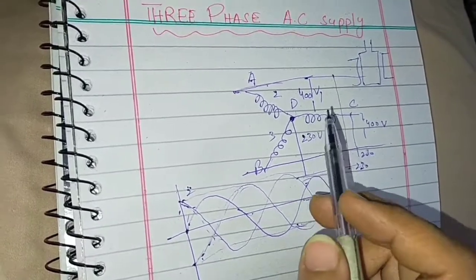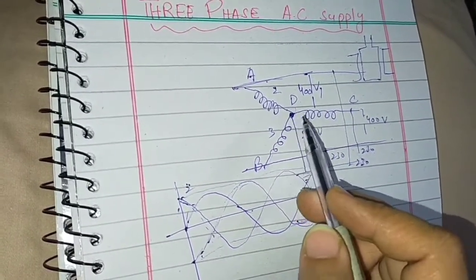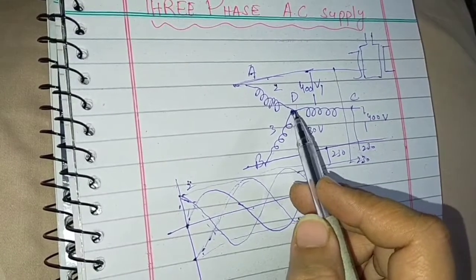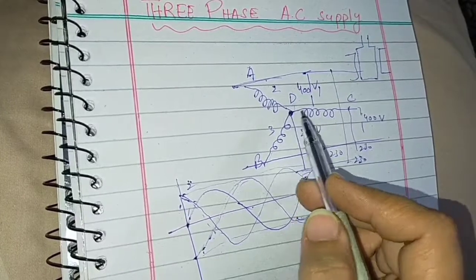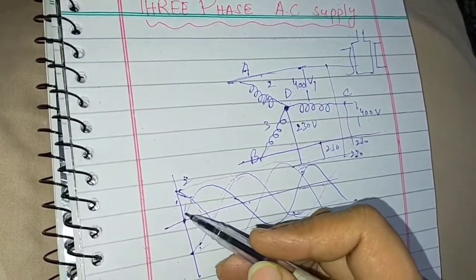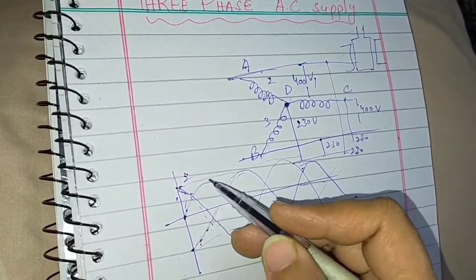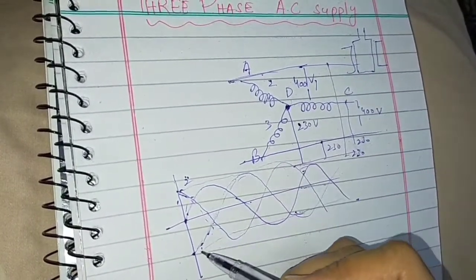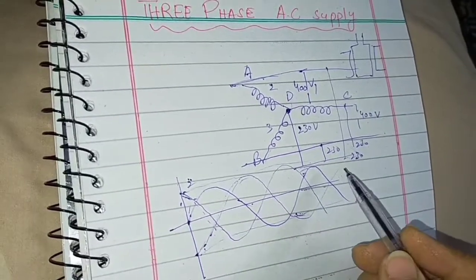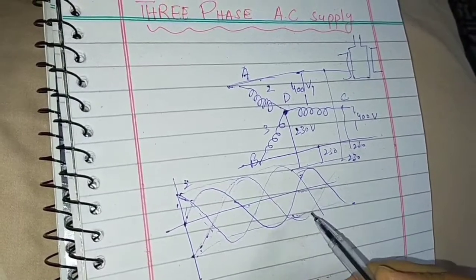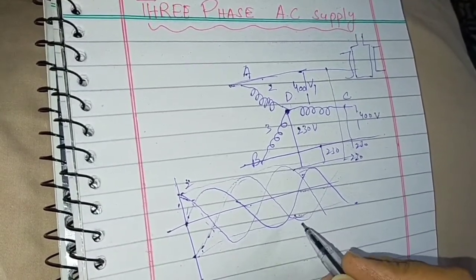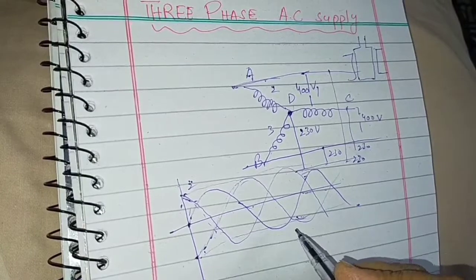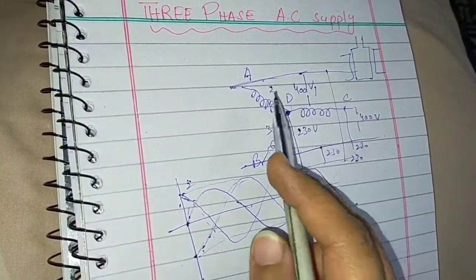To revise: in three-phase AC supply, we are having three coils. These coils are having their own pair of slip rings and they have a common point. We are having a high value of voltage at each and every point of the graph. The advantage is that you can easily use high voltage rating appliances, and overloading is not created, because the load is equally distributed among the three coils.